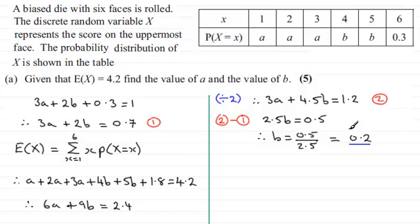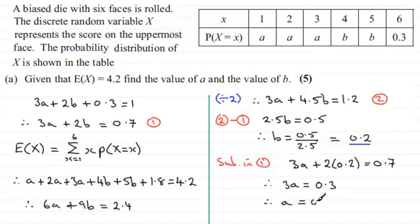And if we do that we've got 3a plus 2 times 0.2 gives 0.7, so this is 0.4. I can subtract 0.4 from both sides and we're left with 3a equals 0.7 minus 0.4 which is 0.3, and if I now divide both sides by 3, a equals 0.1. So there's my values then, a is 0.1, b is 0.2.